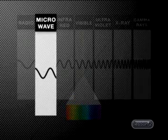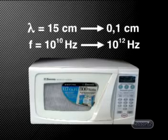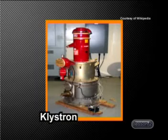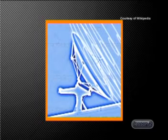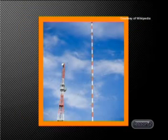Second in wavelength are microwaves. Microwaves have wavelengths between 15 centimeters and 0.1 centimeters, with frequencies ranging from 10 to the 10 hertz and 10 to the 12 hertz. People are able to generate microwaves using electron tubes called klystrons. We use microwaves in satellite communication, microwave cooking, radar speed trapping guns, and for radar air traffic control.